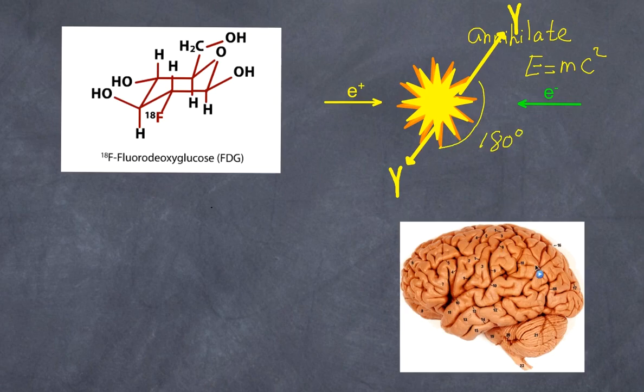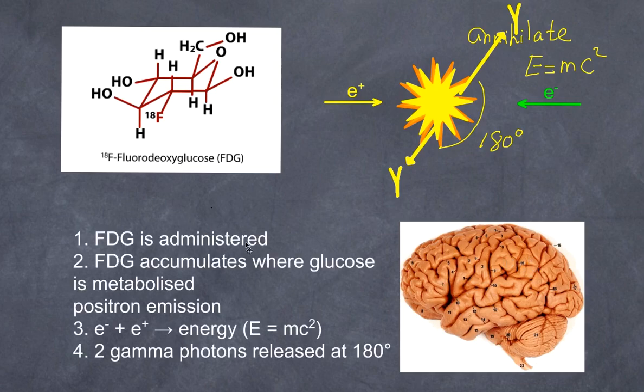Here's an example of a brain—I've got a picture of a brain here because the brain utilizes a lot of glucose. We have FDG administered, it accumulates where glucose is metabolized, we have positron emission, and the positron annihilates with an electron to produce energy and two gamma photons released at 180 degrees. Some may ask why 180 degrees—that is explained by the law of conservation of energy.